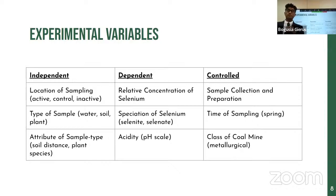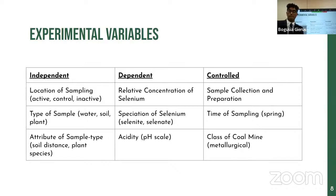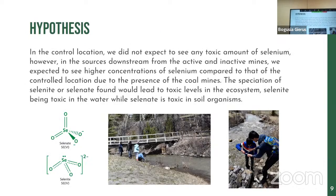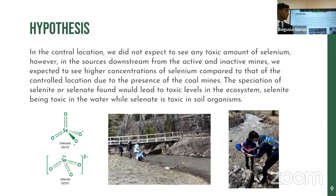For controls, we controlled for time of year by taking all samples on the same day during spring and standardized our entire collection and preparation procedure. Both the active and inactive coal mines were metallurgical coal mines. In the control location, we did not expect to see any toxic amount of selenium. Downstream of the active and inactive mines, we expected higher selenium concentrations compared to the control. The speciation found — selenite or selenate — would indicate toxicity: selenite being more toxic in water, selenate more toxic in the terrestrial environment.